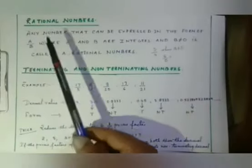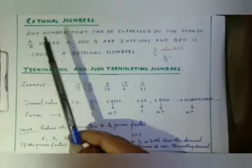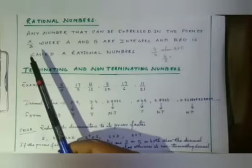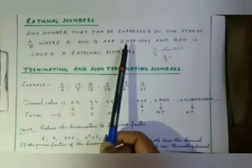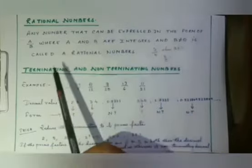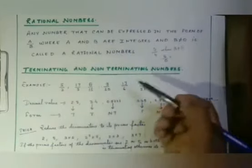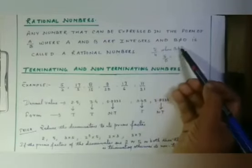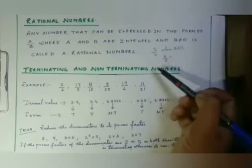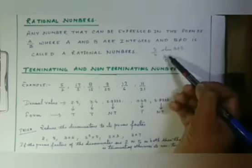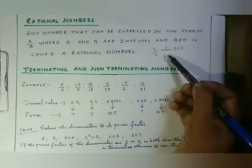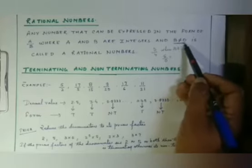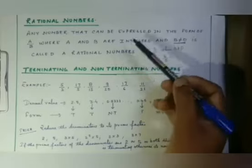Let us start with another topic, that is rational numbers. What are rational numbers? Any number that can be expressed in the form of A by B, or A upon B, where A and B are integers and B is not equal to 0, is called a rational number. For example, 5 upon 4 is in the form of A by B where B is not equal to 0. If we write 5 upon 0, it cannot be defined — that is why the condition B is not equal to 0 is given. I hope it is clear to everyone.